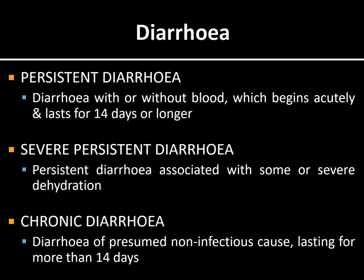Coming to the classification of diarrhea according to duration: we have acute diarrhea, persistent diarrhea, severe persistent diarrhea where there is dehydration, and chronic diarrhea. Acute diarrhea is recent onset. Persistent diarrhea begins acutely but lasts 14 days or longer. When persistent diarrhea is accompanied by some or severe dehydration, it is called severe persistent diarrhea. Chronic diarrhea normally has a non-infectious cause and lasts more than 14 days.